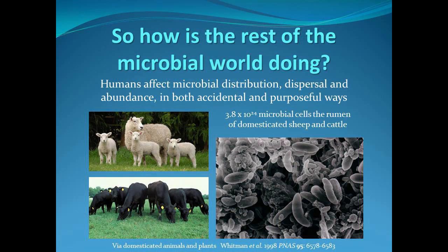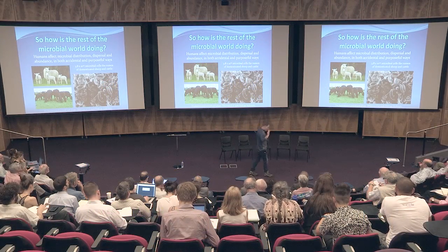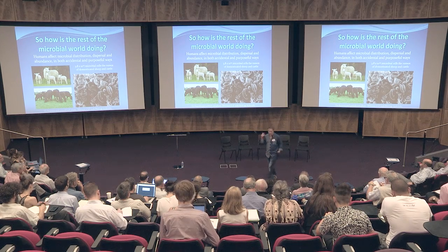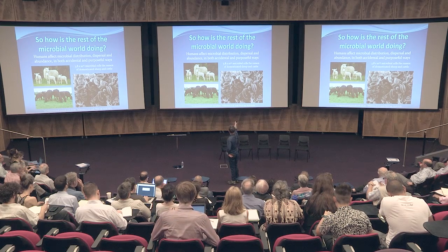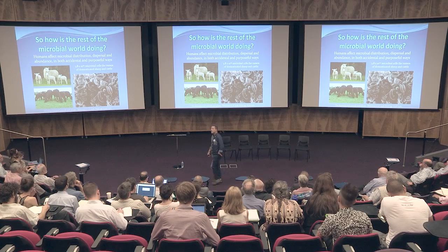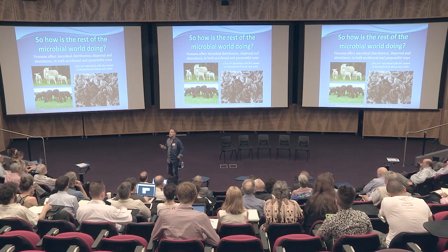How is the rest of the microbial world doing? Pretty well, thank you very much. Humans affect microbial distribution both purposely and accidentally. There are 3.8 × 10^4 microbial cells inside sheep and cattle that otherwise wouldn't be on the planet, and these produce methane. We need to keep an eye on this microbial abundance and activity because it's a component of important Anthropocene changes.